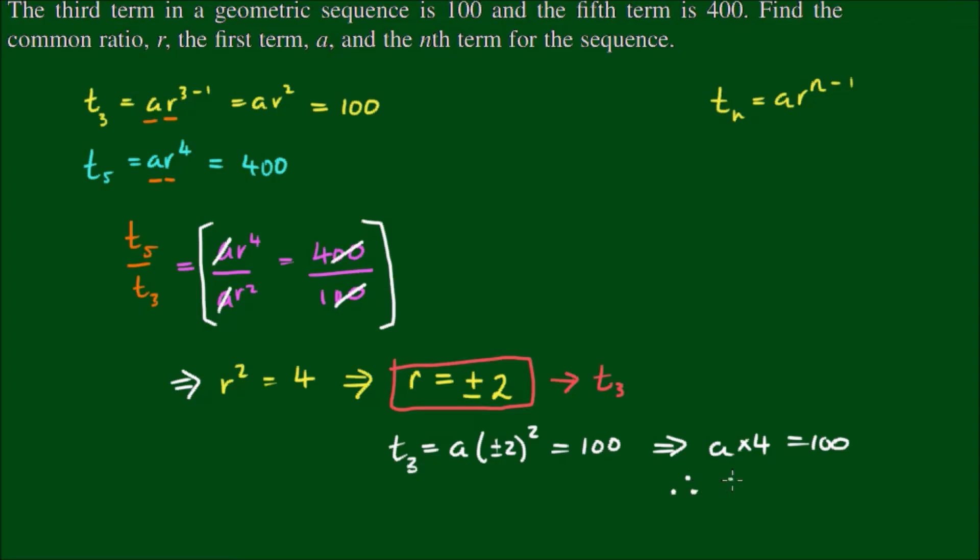And therefore a is equal to 100 divided by 4 equals 25. So this is our second piece of the puzzle.